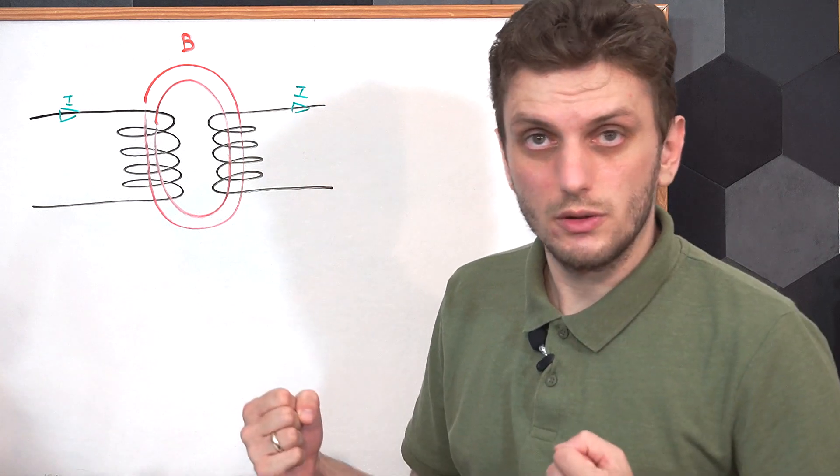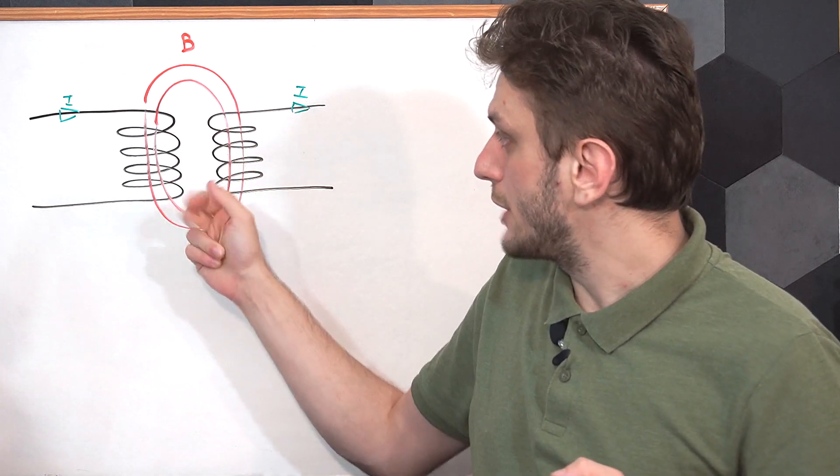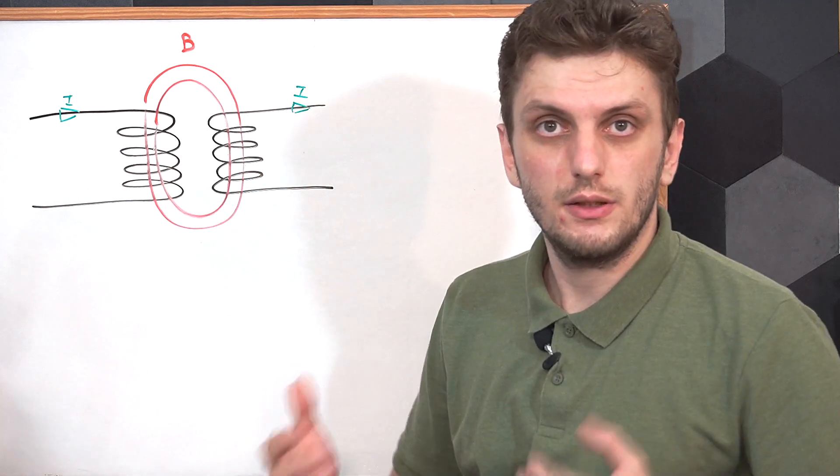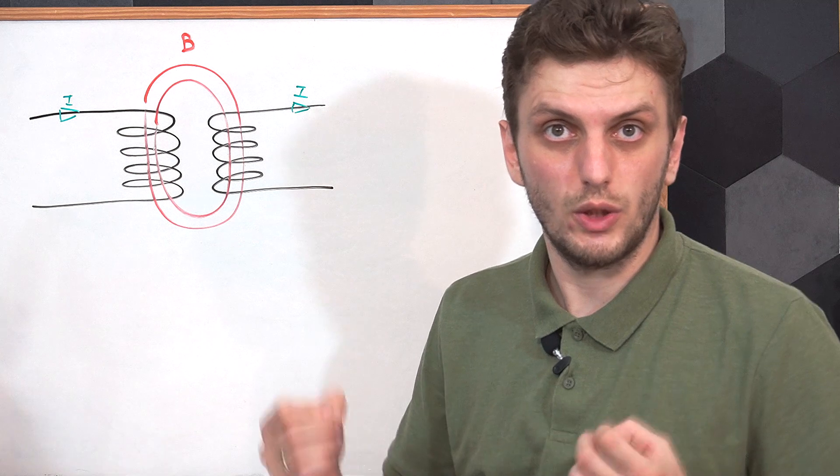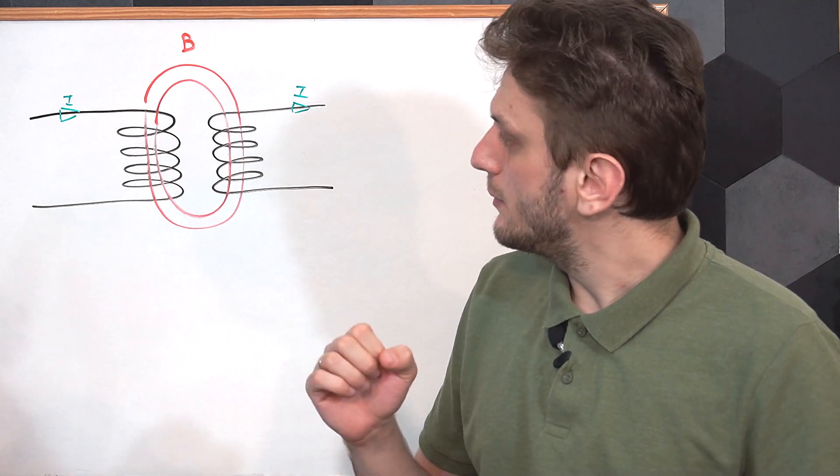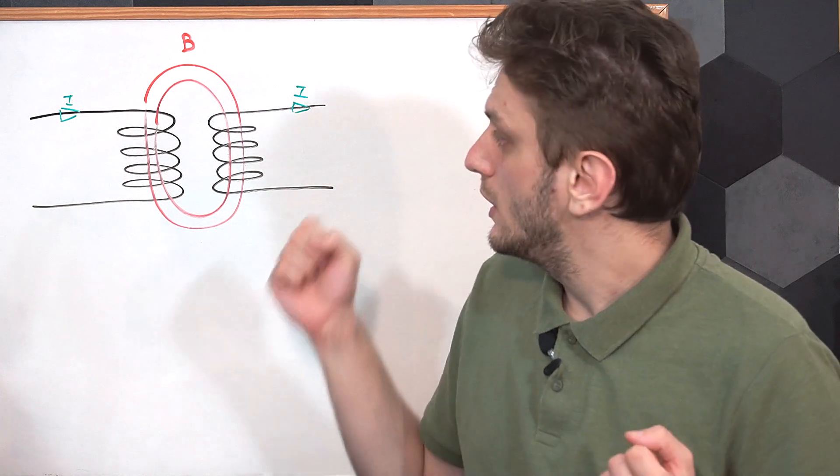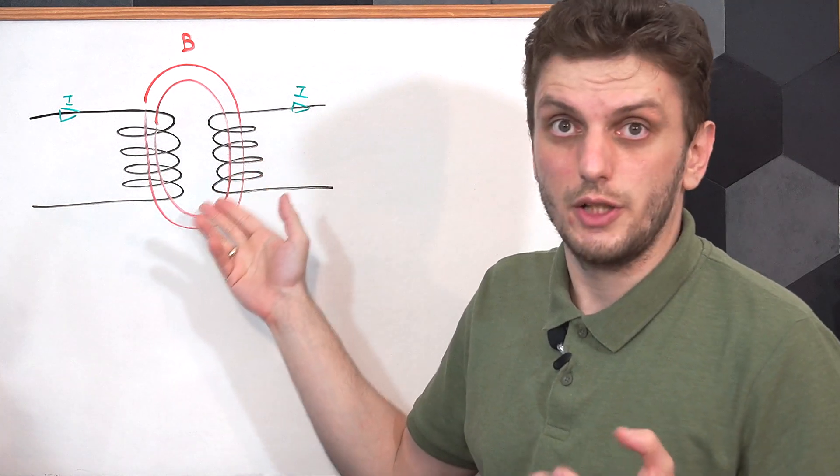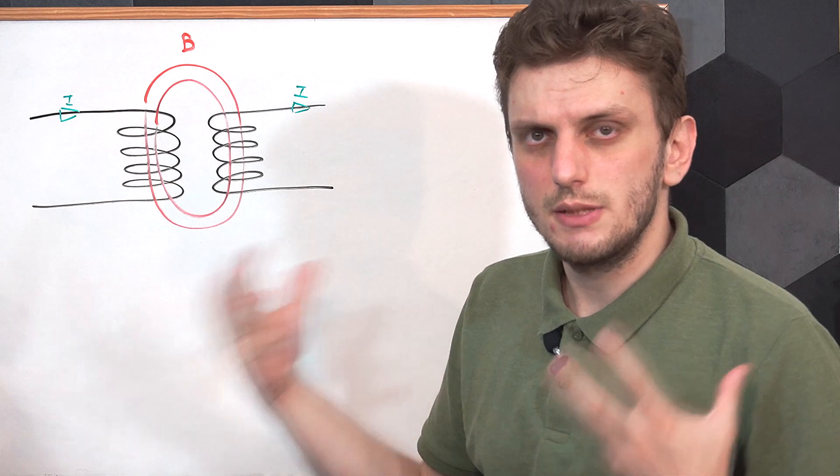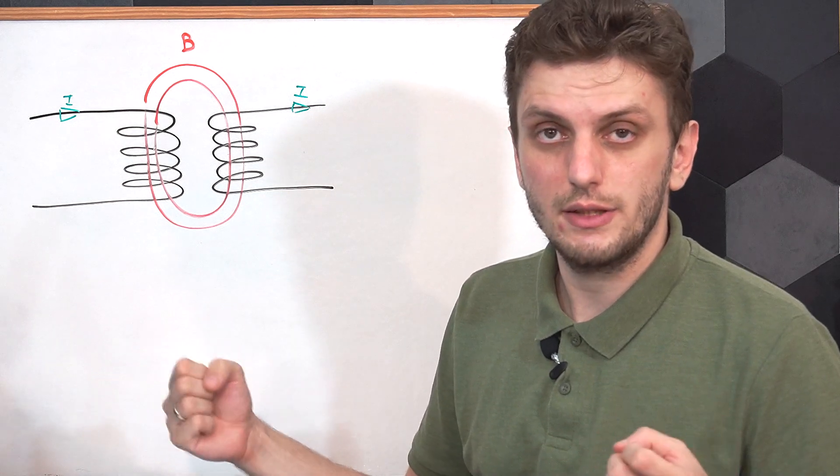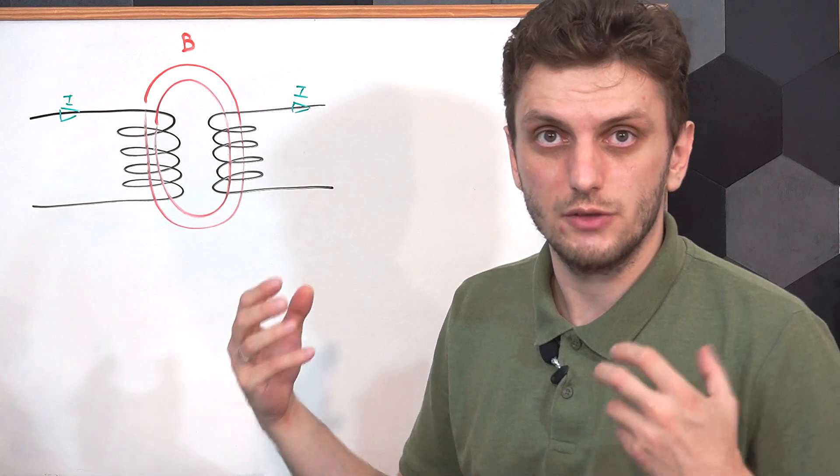Now, in an ideal world, all of the flux generated in the primary will get turned into a current in the secondary, so we will be getting a coupling factor of 1. But in the real world, that doesn't really happen. Most of the flux gets turned into a current on the secondary side, but some of the magnetic flux leaks out, so we won't really get an ideal coupling factor of 1.